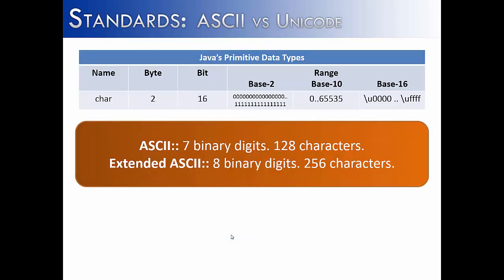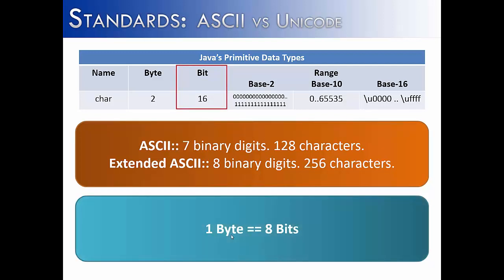The character data type in Java is based off of ASCII and something called Unicode. But ASCII had its limits — it could only store 128 characters and used seven binary digits. A byte contains eight bits, so ASCII moved to eight binary digits, called extended ASCII, which doubled its capacity from 128 to 256 characters. That worked for a very long time, but eventually other countries and languages wanted to incorporate their alphabets or symbols into a standardized code. ASCII became outmoded and people moved to what is called Unicode.